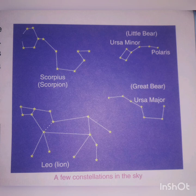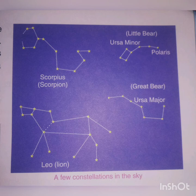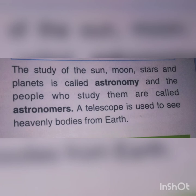Scorpius means scorpion, Ursa Minor means little bear, Ursa Major means great bear, and Leo means lion. The study of the sun, moon, stars and planets is called astronomy, and the people who study them are called astronomers.